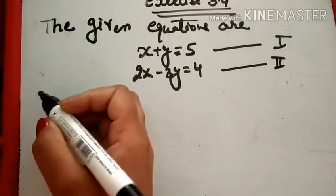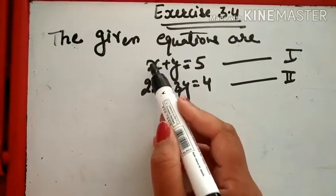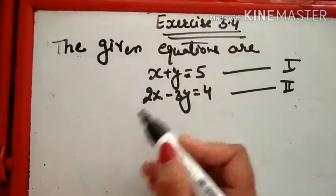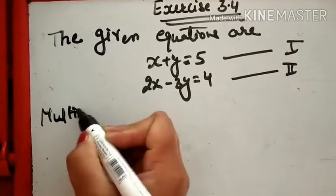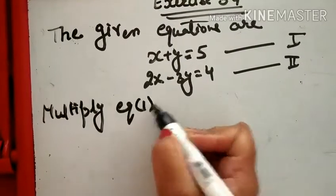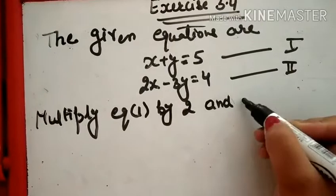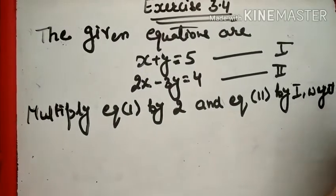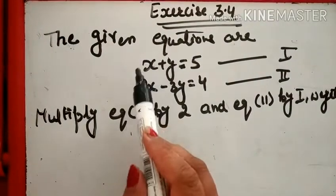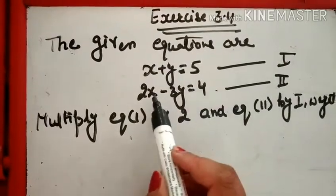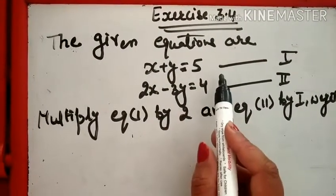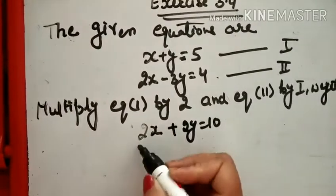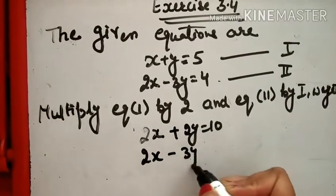अब हमारा First Step हो गया। अब हमने X का Coefficient देखना है। X का Coefficient in First Equation is 1, and in Second Equation X का Coefficient is 2. अब हम क्या करेंगे: Multiply Equation First by 2 and Equation Second by 1, we get: 2X + 2Y = 10 और 2X − 3Y = 4।